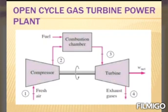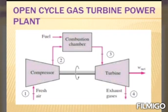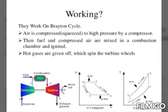In open cycle gas turbine, there are three main components: compressor, combustor, and turbine. In open cycle, fresh air enters into the compressor and gases coming out of the turbine are exhausted into the atmosphere. This type of cycle is known as open cycle gas turbine.